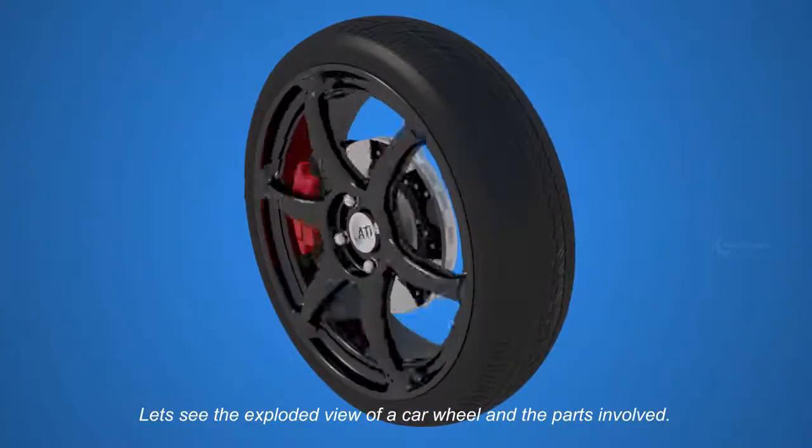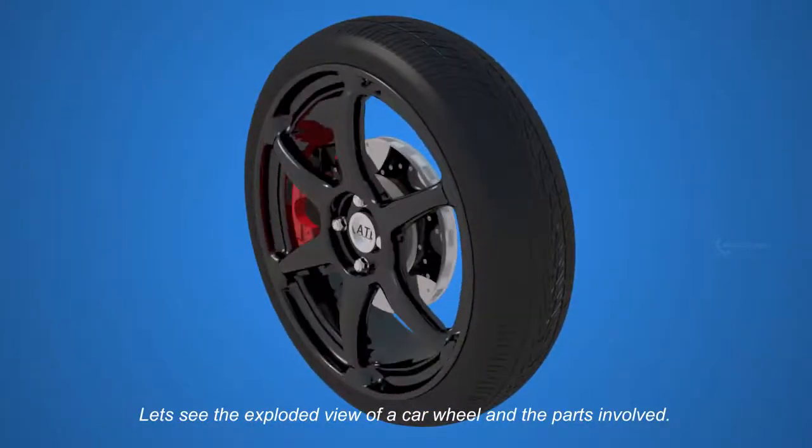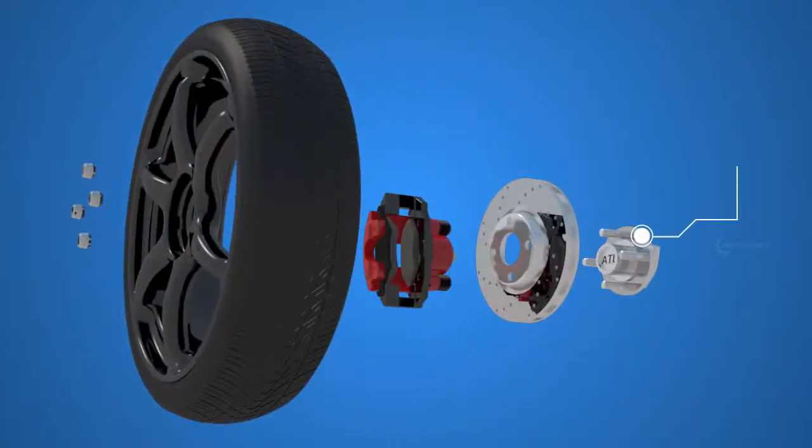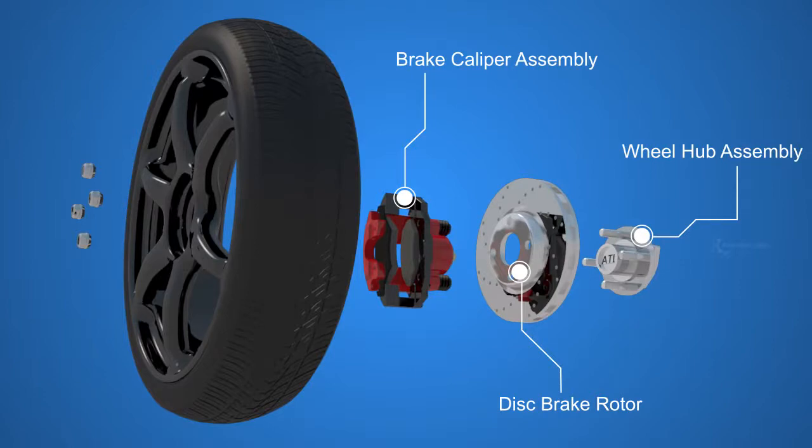Let's see the exploded view of a car wheel and the parts involved: the wheel hub assembly, the disc brake rotor, the brake caliper assembly, the wheel, and the lug nuts.